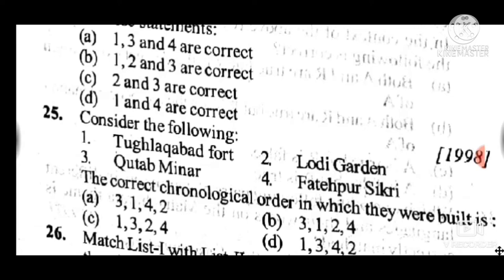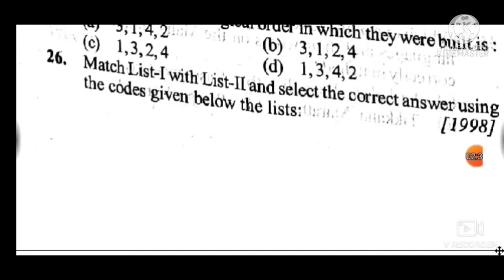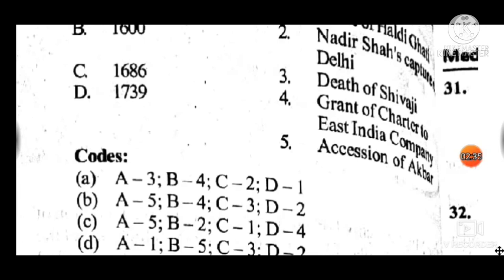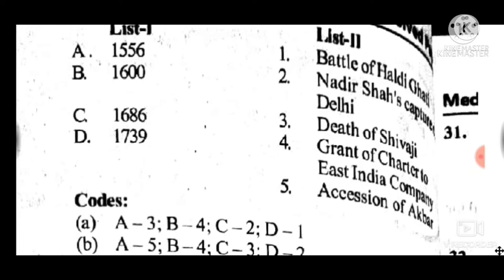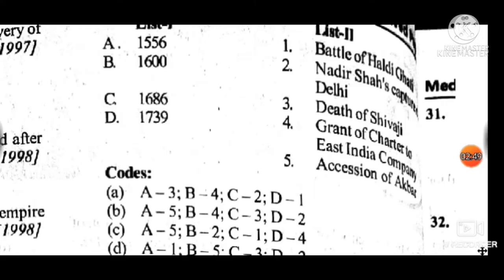Question 26 is a match-list question. Answer is B: A relates to 1556 — accession of Akbar; B relates to 4th — grant of charter to the East India Company; C relates to 3 — death of Shivaji in 1680; D relates to 2nd — 1739, Nadir Shah's capture of Delhi.